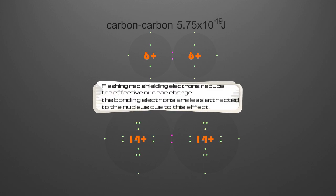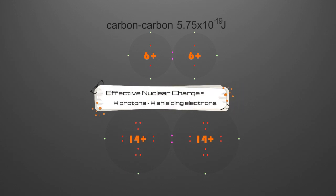This is the so-called effective nuclear charge. Effective nuclear charge is the number of protons minus the number of shielding electrons. And shielding electrons are the non-valence electrons, the ones that are getting in the way of the valence electrons.